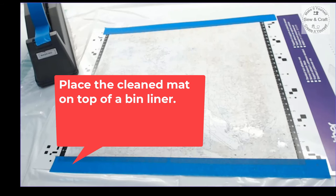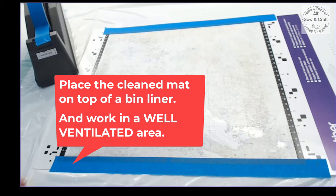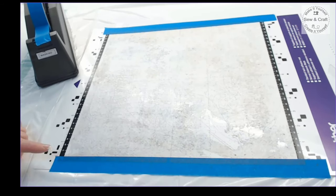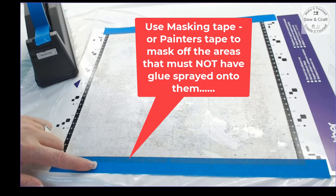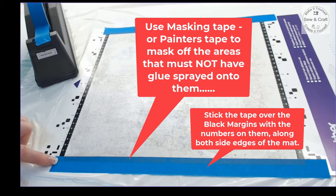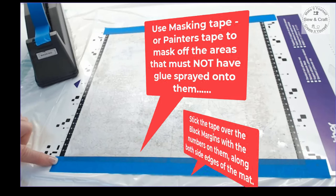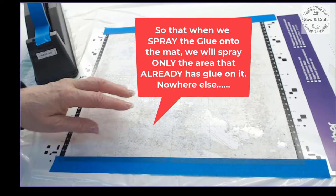You'll start by placing the mat on top of a bin liner and please work in a well ventilated area. We're going to take masking tape or painters tape to mask off the areas that must not have glue sprayed onto them. We're going to stick the tape over the black margins that have got the numbers on them along both side edges of the mat so that when we spray the glue onto the mat we will spray only the area that already has glue on it and nowhere else.